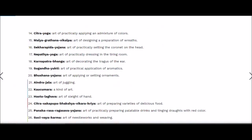Chitra Yoga is the art of practically applying an admixture of colors on the body, on the floor, or for stage preparation. Malya Grathana Vikalpa is the art of designing and preparation of garlands — the flowers, plants, entire trees, or plantain trees used. Then Shekharapira Yojana, the art of practically setting the coronet on the head. If a crown has to be kept, there is a specific way to proceed since you are depicting a Raja or royal king.